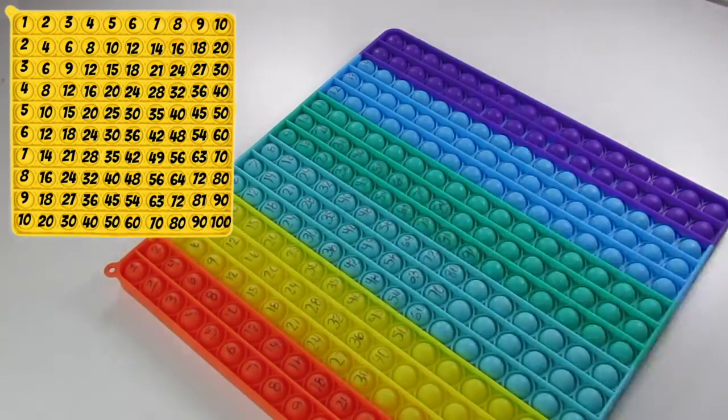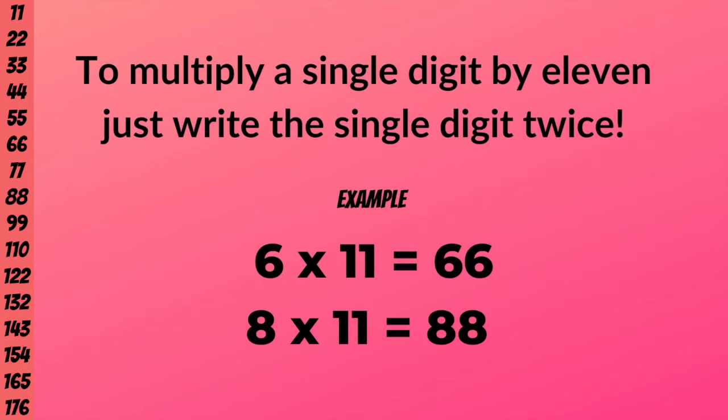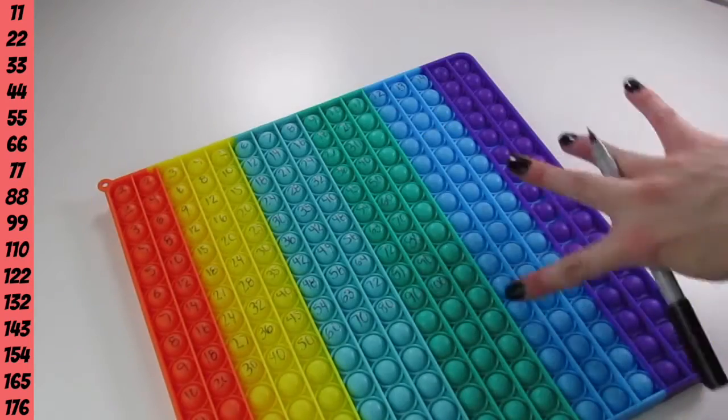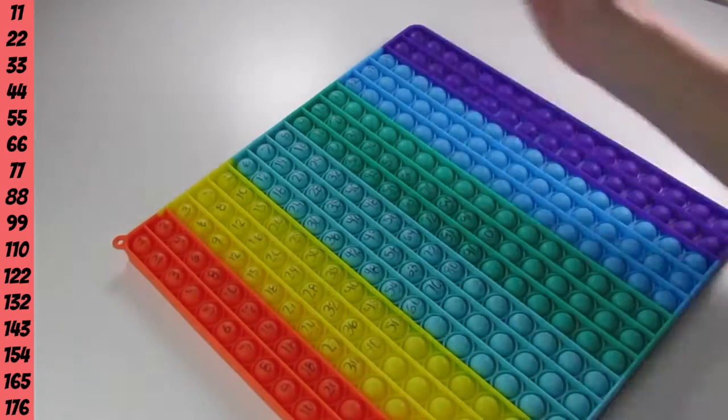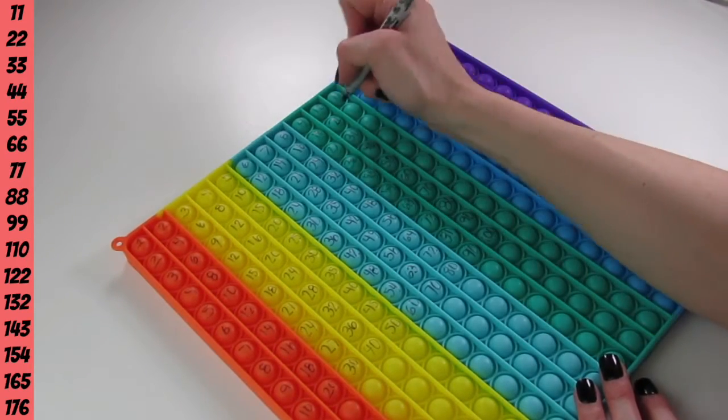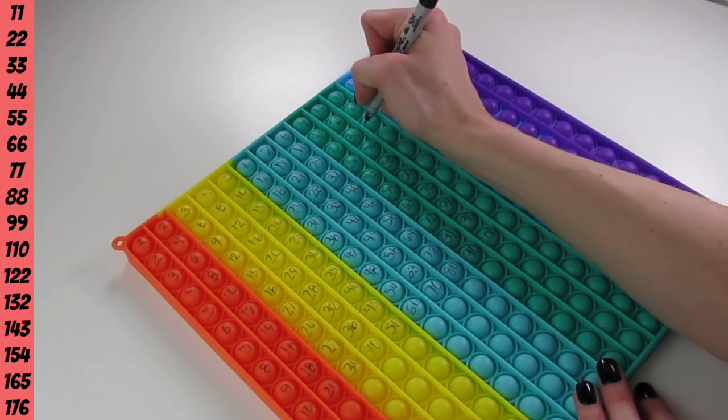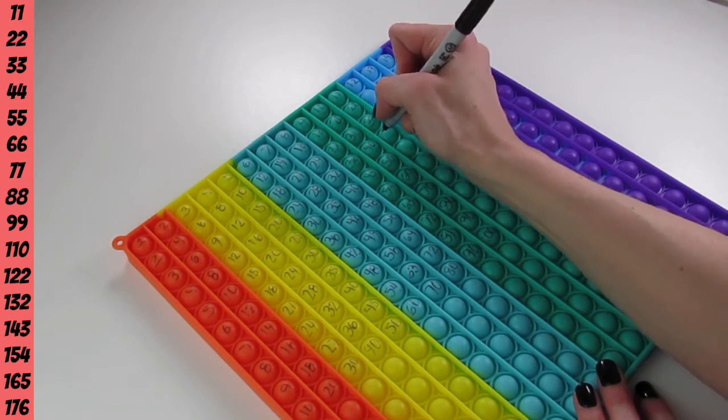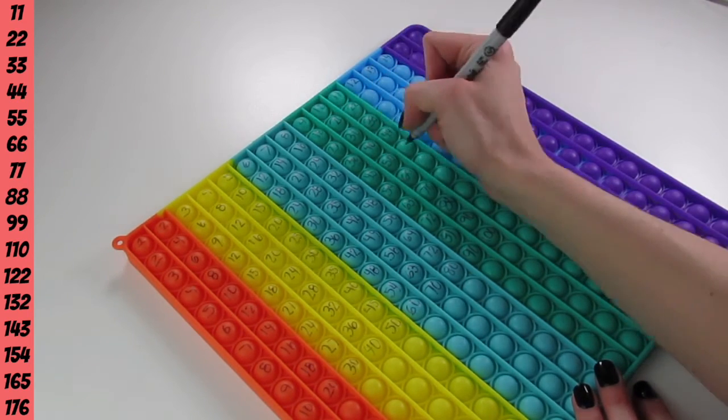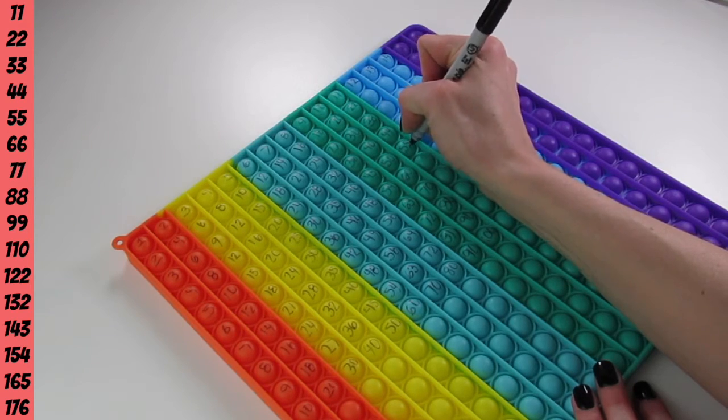So the first group outside of 1 through 10 that we're going to count by is 11s. And when multiplying by 11s, it's pretty easy whenever you have a single digit. All you have to do is put that single digit twice. So 11 times 2, 22. 11 times 3, 33. 11 times 4, 44.